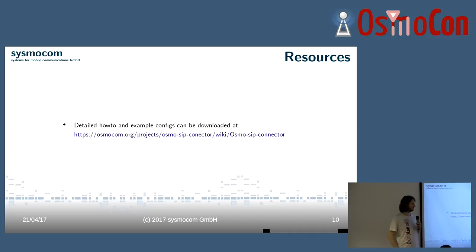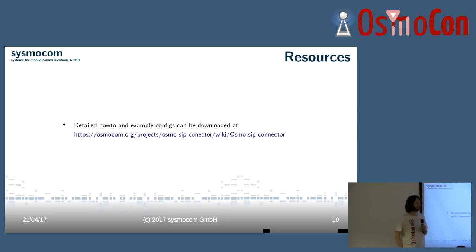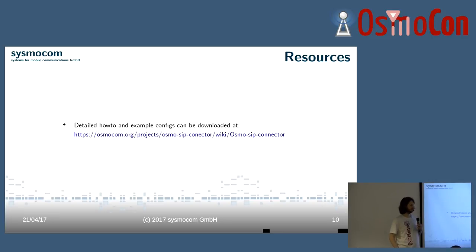Someone mentions they have a working SIP-to-SMS gateway using FreeSWITCH chat plan. Question about OsmoNITB RTP proxy mode (capital P switch): how does that operate in relation to the RTP stream going directly from the BTS to the SIP PBX? Is there audio going through the NITB?